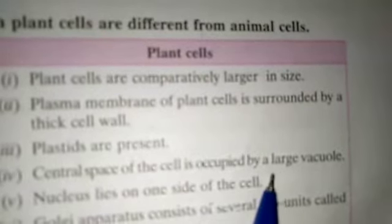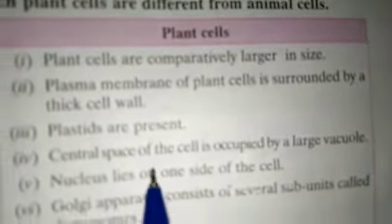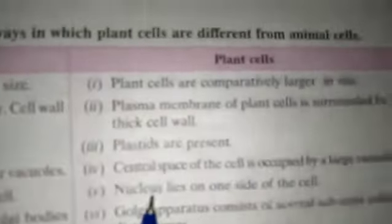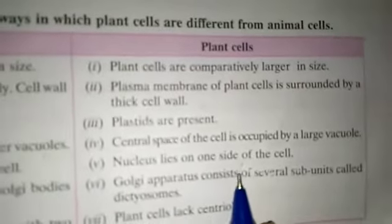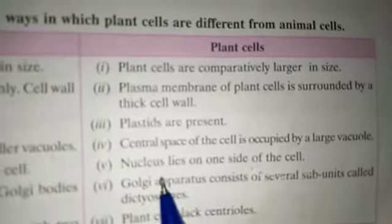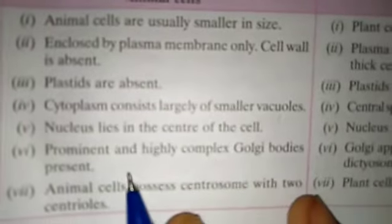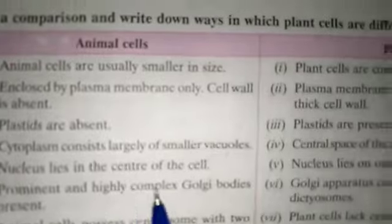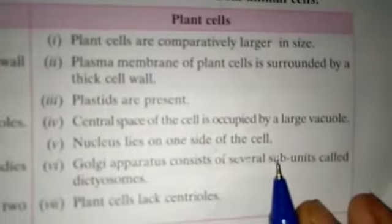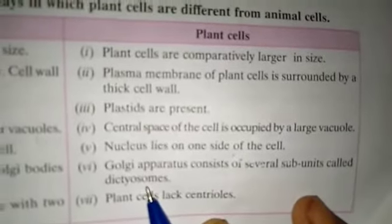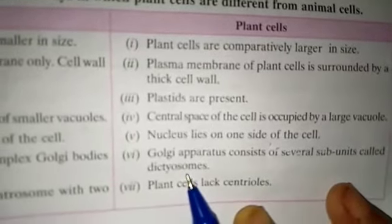In plant cells, large vacuoles are present at the center. The 5th difference: in animal cells, the nucleus lies in the center of the cell, whereas in plant cells, the nucleus lies on one side of the cell. Next feature: prominent and highly complex Golgi bodies are present in animal cells, but in plant cells, Golgi apparatus consists of subunits called dictyosomes — they are referred to as dictyosomes, not Golgi bodies, in plant cells.